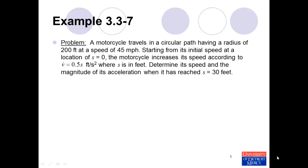This problem is from the textbook Conceptual Dynamics, specifically example 3.3-7. The problem statement reads: a motorcycle travels in a circular path having a radius of 200 feet at a speed of 45 miles per hour. Starting from its initial speed at a location of s equals zero, the motorcycle increases its speed according to the equation v-dot equals 0.5 times s feet per second squared, where s is in feet. Determine its speed and the magnitude of its acceleration when it has reached s equals 30 feet.